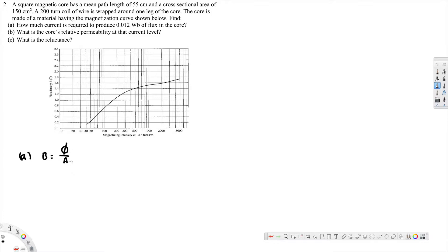Phi is given, that is 0.012 weber, divided by the area, which is 150 centimeter square. To convert this to meter square we multiply by 10 to the power minus 4. So that gives us 0.015 meter square, and that gives us 0.8 tesla.